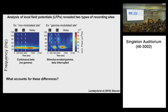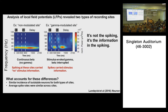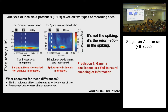What accounts for the difference between these two types of recording sites? We had a similar incidence of isolatable neurons at both types of sites, and even the spike rates were nearly identical. The difference turned out to be that spikes at the continuous beta sites carry no information about the stimuli being held in working memory — they may be spiking, but not carrying any information. Whereas spikes at the gamma-modulated sites did carry stimulus information. So it wasn't the spiking that separated these two site types; it was the fact that spiking at the gamma-modulated sites carried information about the working memories. This is consistent with prediction one of the model: gamma oscillations are tied to the neural encoding of information in working memory.